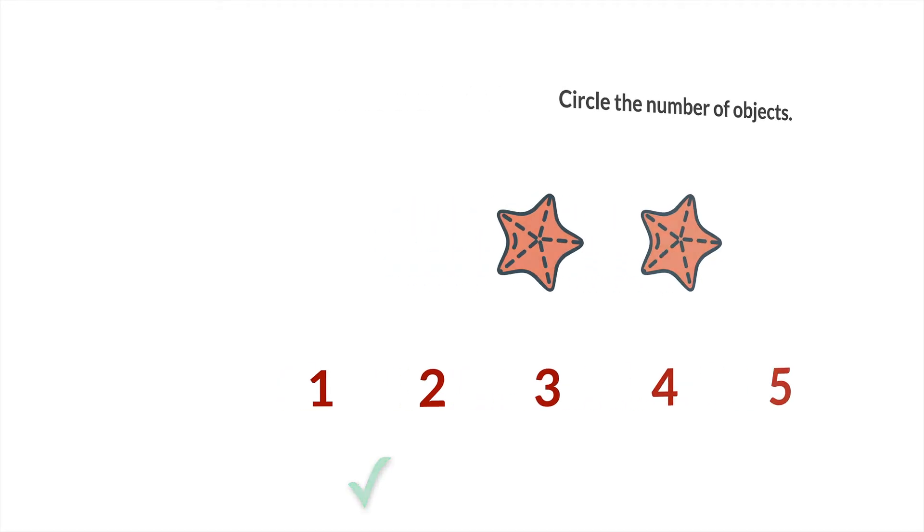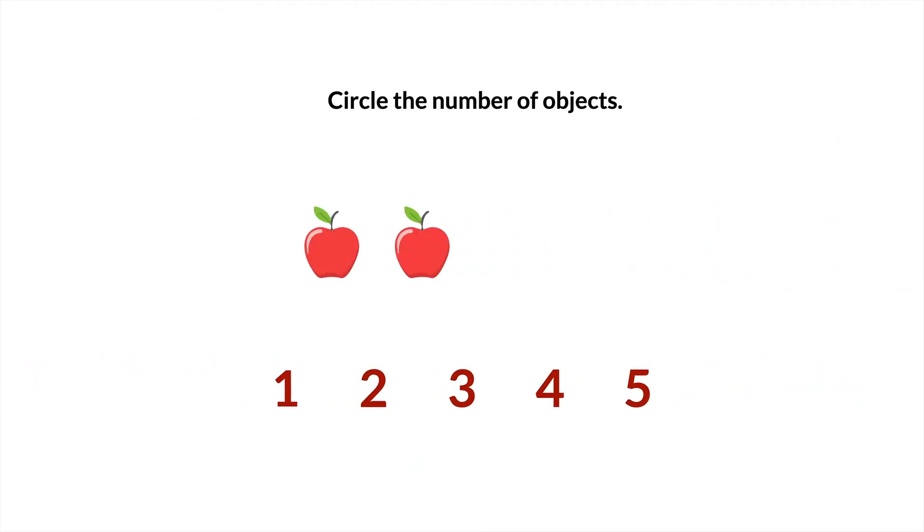All right. Next set of objects. What are those? Apples. Four to be exact. One, two, three, four. Four apples. Good job.